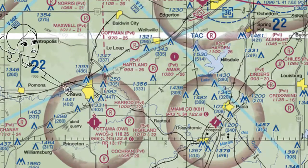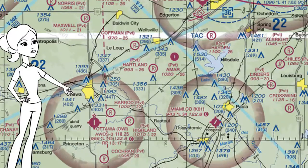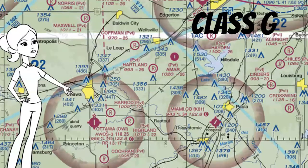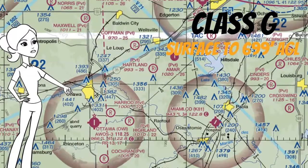Inside these hazy magenta rings, we said that Echo starts at 700 feet AGL. And as you've probably already guessed, underneath that you'll find Golf starting at the surface and going up to, but not including, 700 feet.